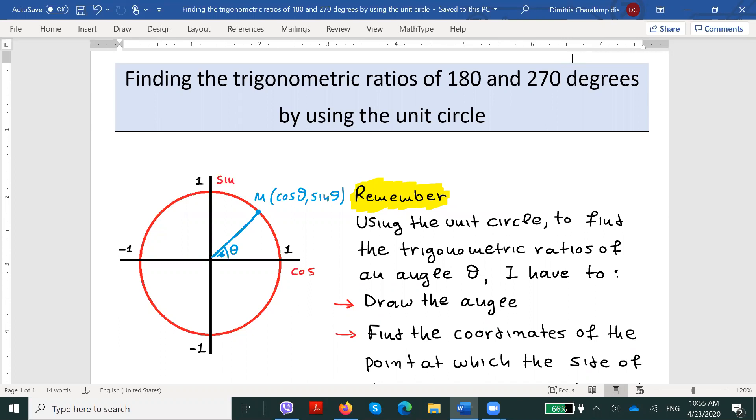Before we proceed, let's remember that the unit circle is basically a circle whose radius is equal to 1 and has the origin as its center. Remember that the origin is the point with coordinates (0, 0).